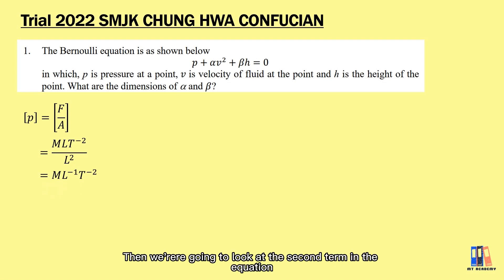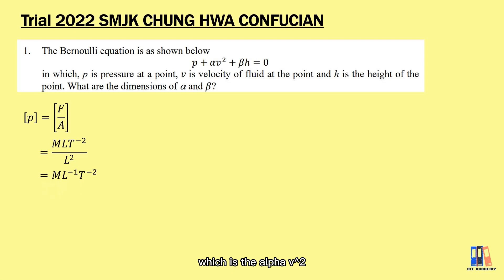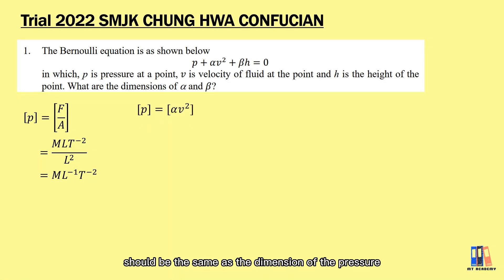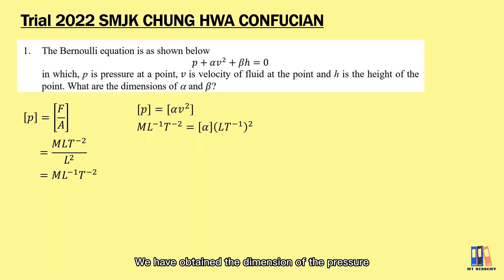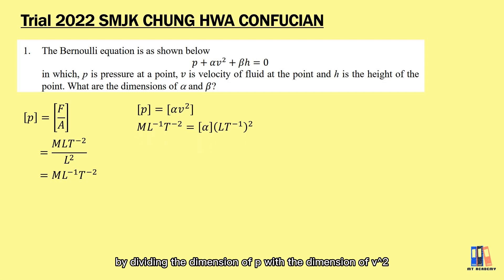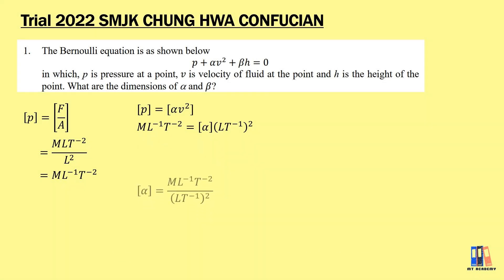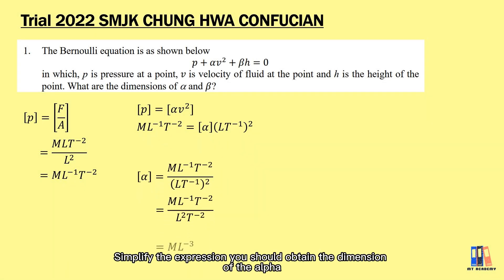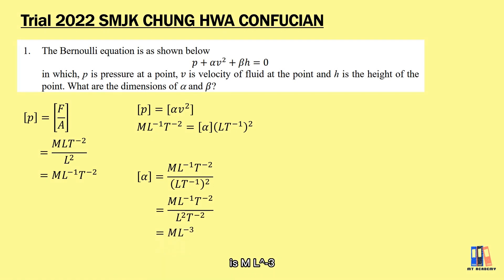Then we look at the second term in the equation, which is alpha v squared. The dimension of alpha v squared should be the same as the dimension of pressure. We have obtained the dimension of pressure as M per L per T squared, and we know the dimension of velocity is L per T. From here, we can obtain the dimension of alpha by dividing the dimension of p by the dimension of v squared. Simplifying the expression, the dimension of alpha is M per L cubed.